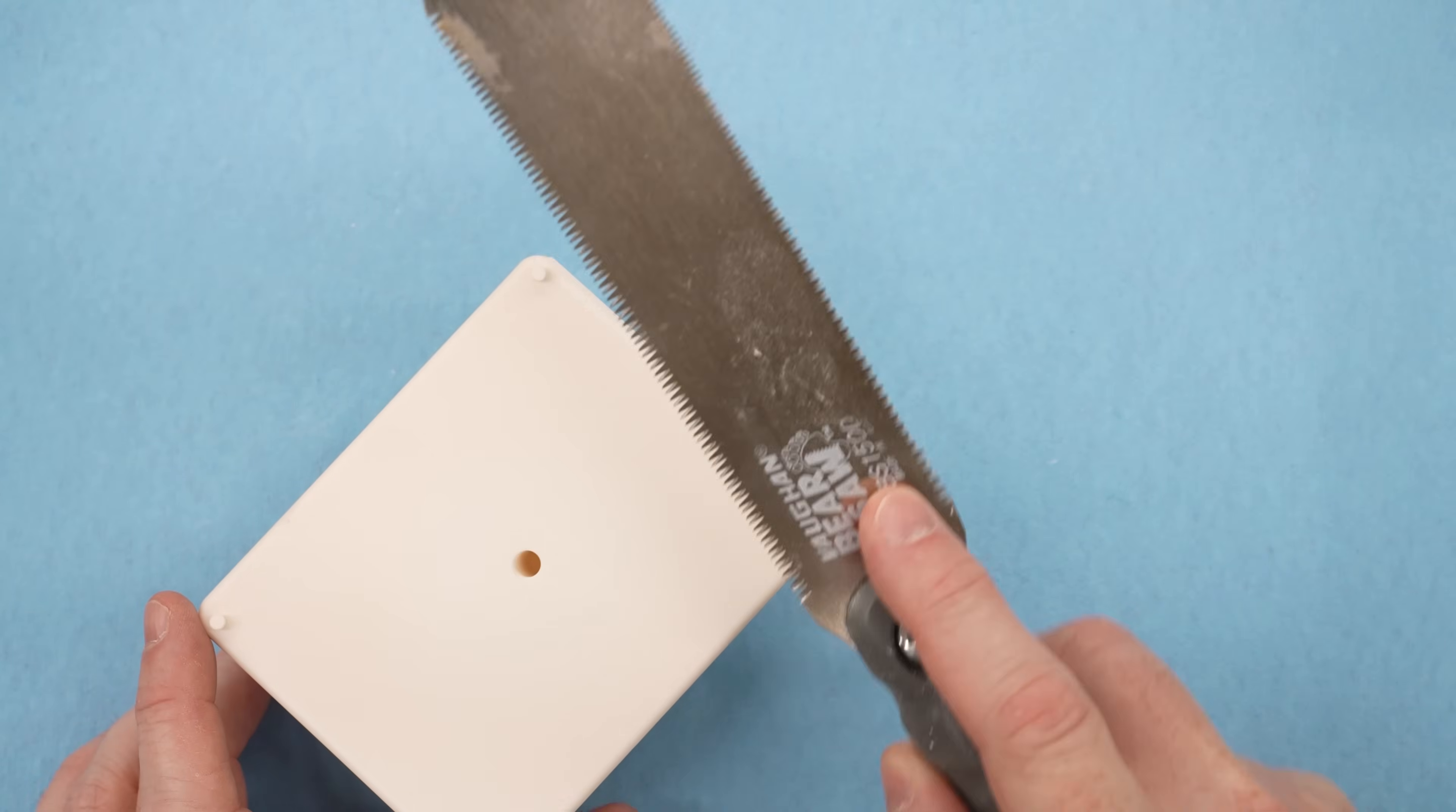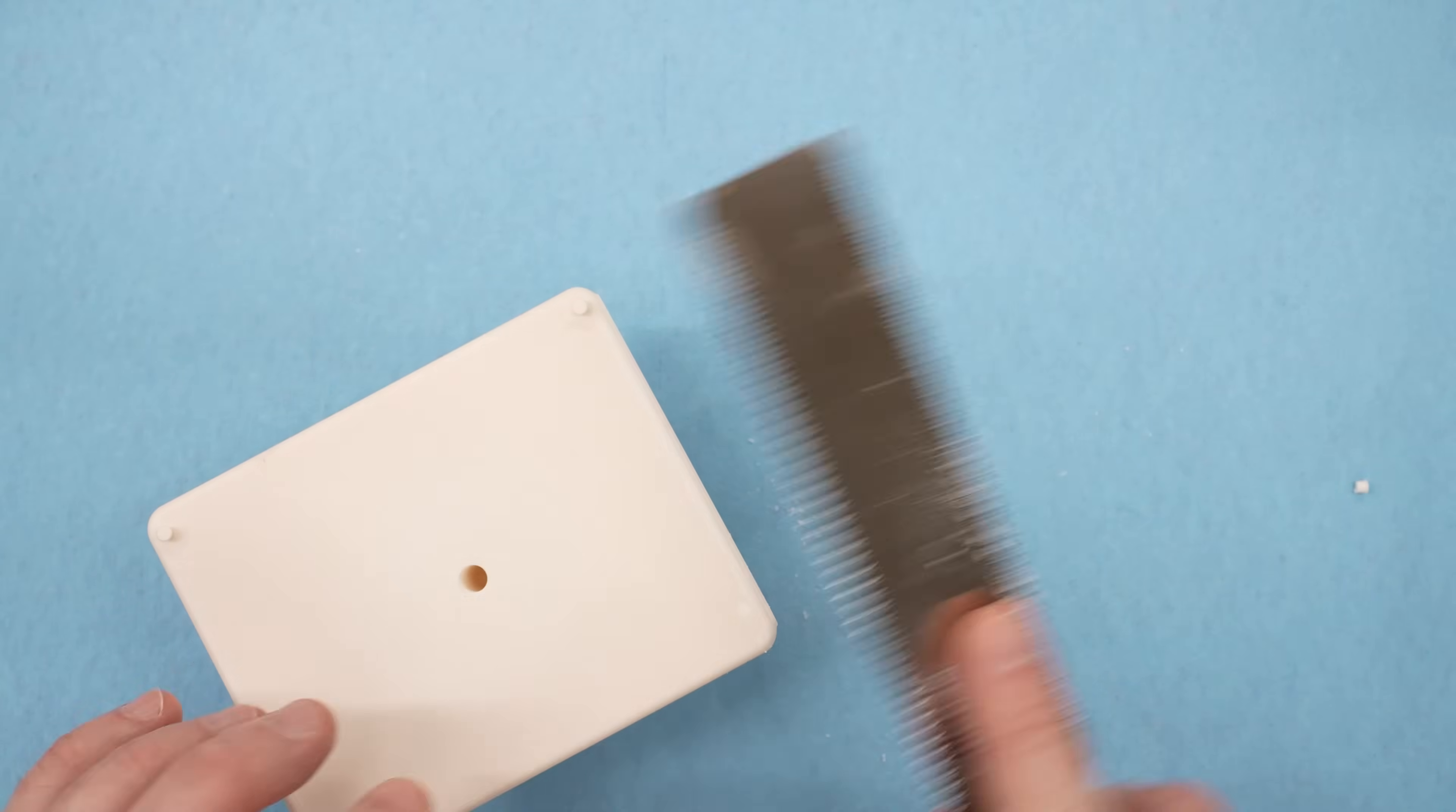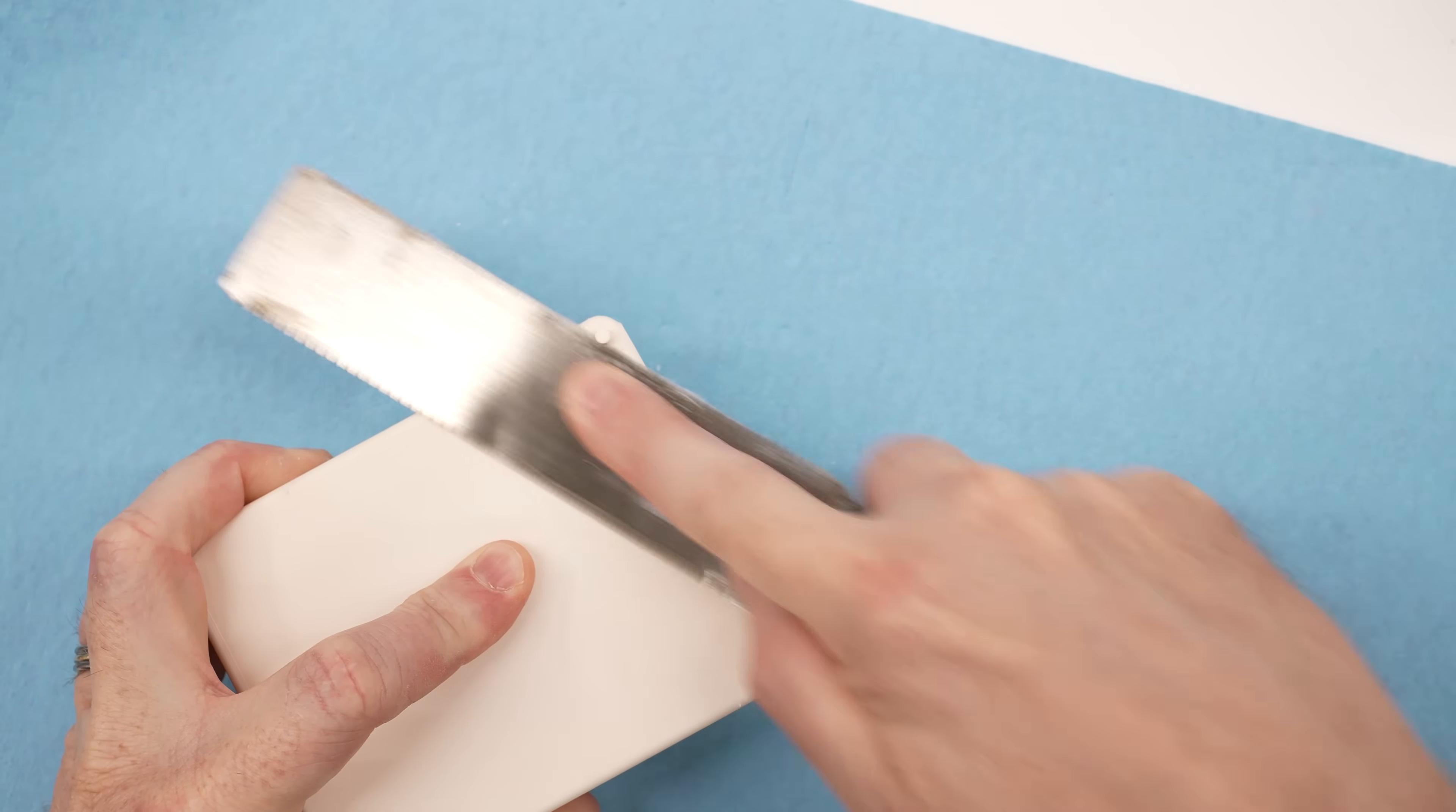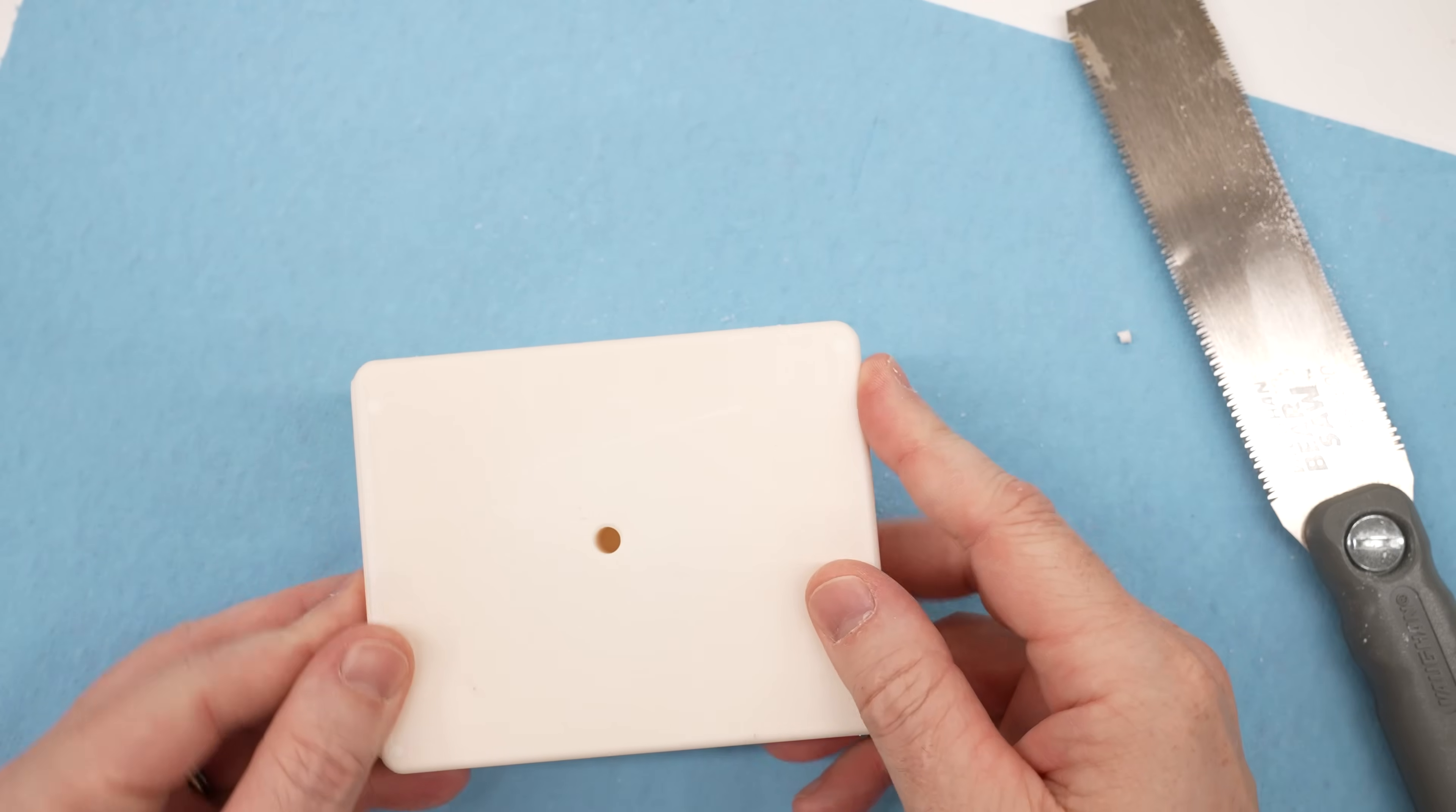Now, the easiest way to get these off is just with a Japanese style flush saw. These kinds of woodworking tools tend to work really well for post-processing plastic like this. Now I do like to go nice and slow when cutting these off. Now I am noticing that this material is much, much harder to cut than the nylon like material. It's just more rigid and this stuff set up a lot harder.